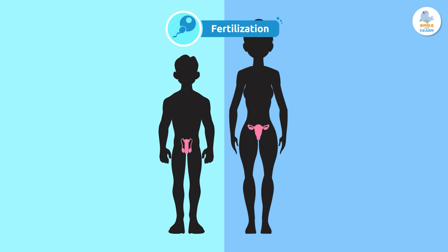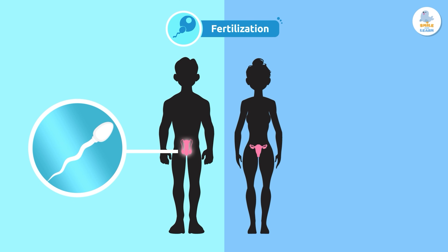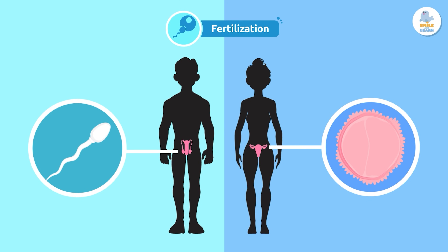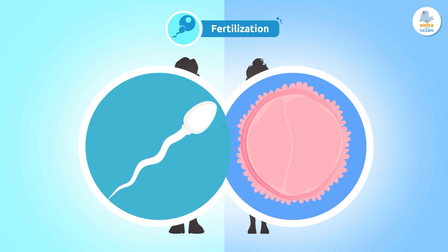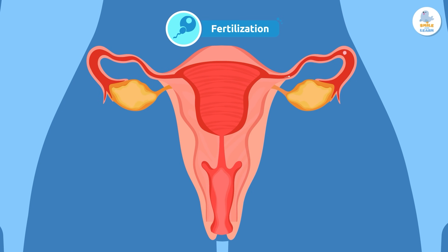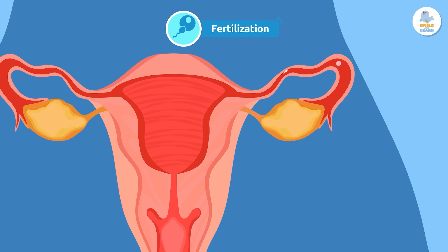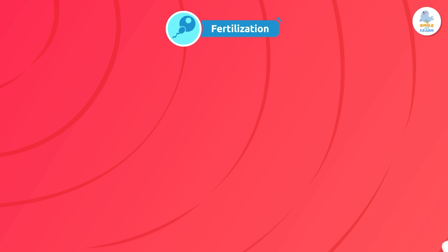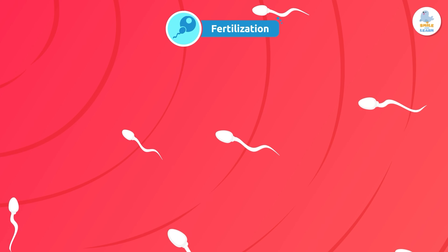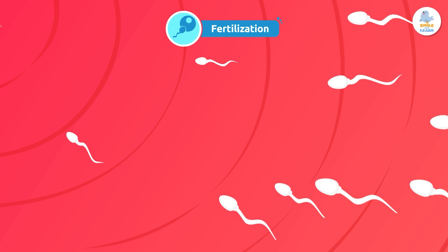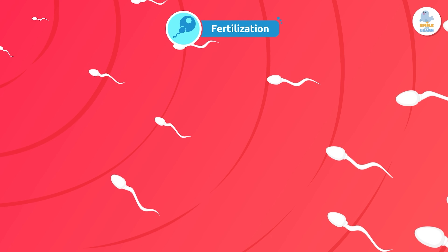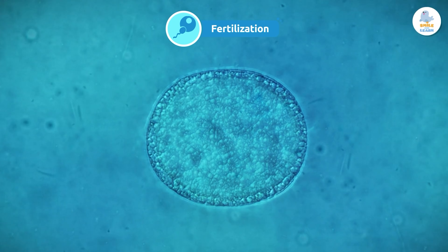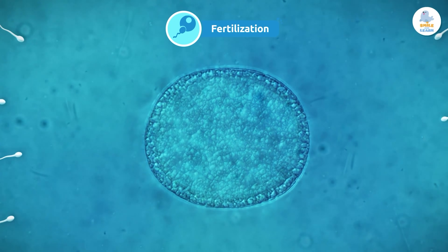It all begins when a sperm from the man's body joins with an egg from the woman's body. This union is called fertilization and takes place in the woman's reproductive system. For this to happen, sexual intercourse must take place. This is when the man's body expels millions of sperm cells through semen.